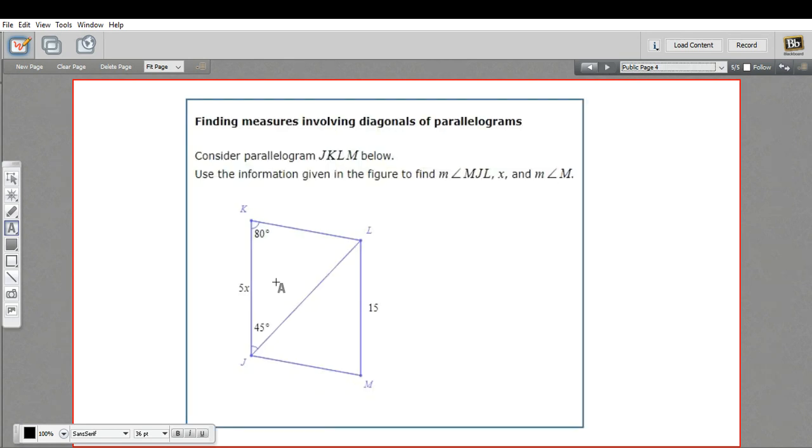Here we have a diagram, and we've been given one angle here, an angle on one side of a diagonal. We've got a side of 15 over here. We've got a variable expression over here. Let's see what they want us to find. It says use the information to find the measure of MJL. Let's see, MJL. So that's this angle right here that we want to find.